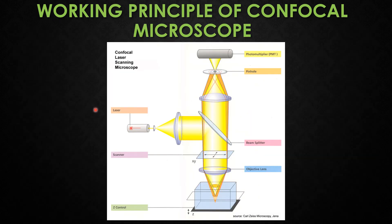The working principle of the confocal microscope: the confocal microscope uses a laser beam instead of conventional light. The laser beams are released from their source and focused onto a fluorescent-stained sample. Neutral density filters and a set of scanning mirrors control the intensity of the laser light by moving them very precisely.